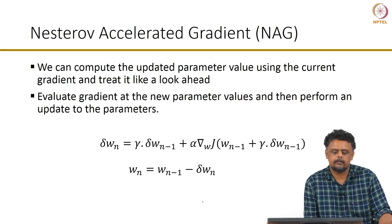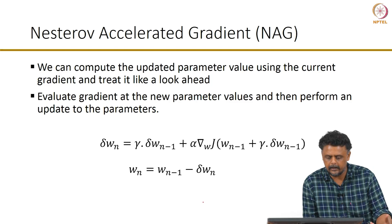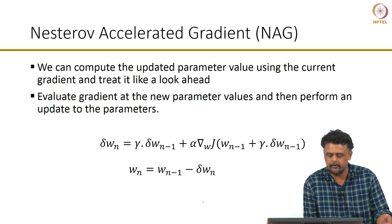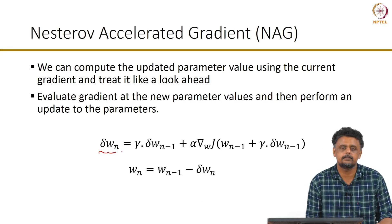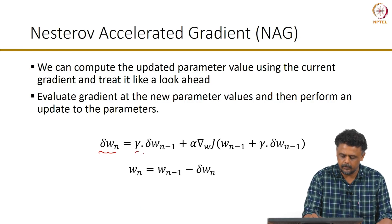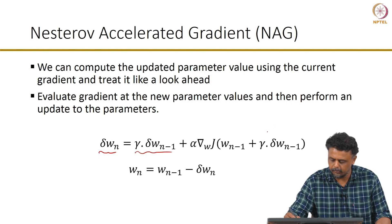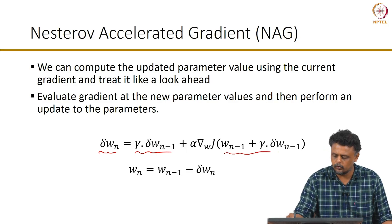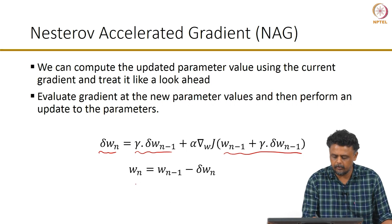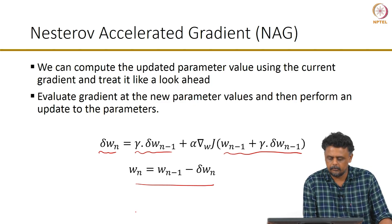The Nesterov accelerated gradient goes a bit further. If you calculate the update and add it to the previous iteration value, you treat that as a look-ahead and evaluate the gradient at the look-ahead point. The update delta W_n has a fraction of the previous update, but instead of calculating the gradient J with respect to W_{n-1} as in the momentum update, here you calculate J with respect to the look-ahead parameter. Then you perform the usual update, which helps you get better estimates of your parameter updates.